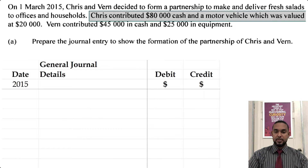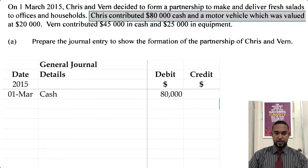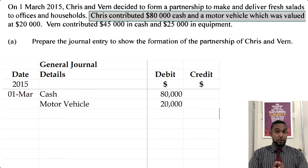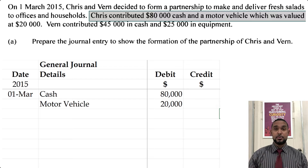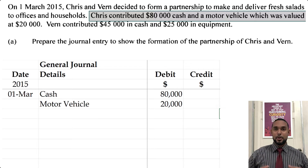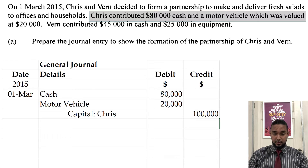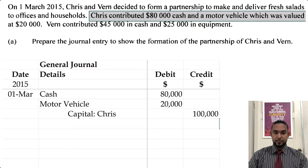On the 1st of March: cash $80,000, motor vehicle $20,000. Remember, anything an owner puts into the business is referred to as his or her capital. So we credit Capital — Chris for $100,000.